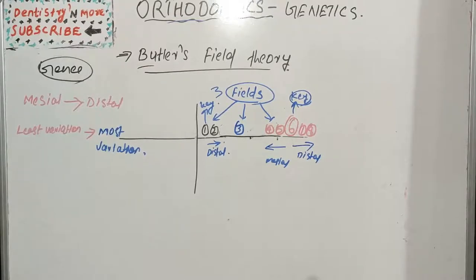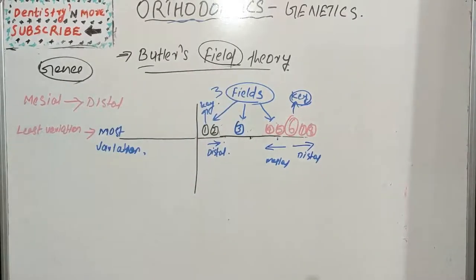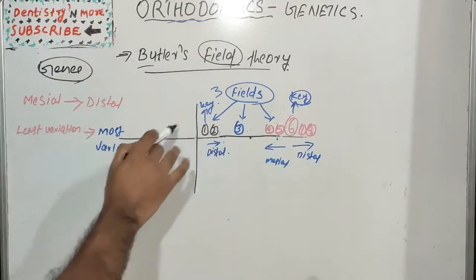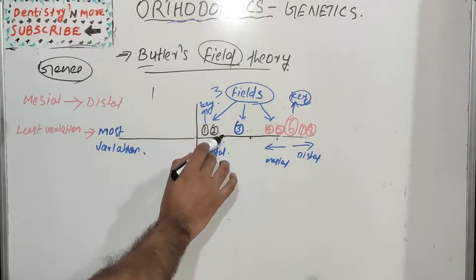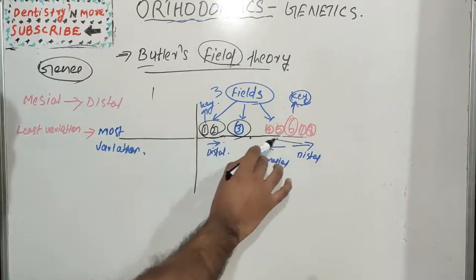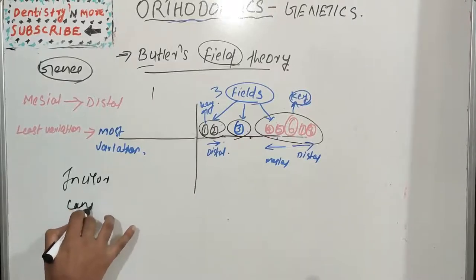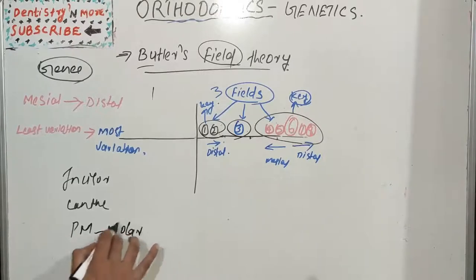Butler postulated a genetical theory which is known as the Field Theory. Coming to the oral cavity, he said there are three fields in one quadrant. We have four quadrants — one, two, three, and four. He said there are three fields: the incisor region, the canine region, and the premolar-molar region.